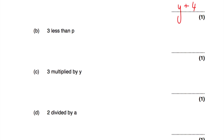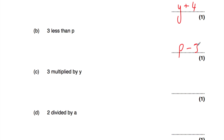Part b: three less than p. If p was ten, three less than ten would be seven, and we would do ten take away three. So three less than p would be whatever p is, take away three. If you want to find three less than a number, you take away three from it. So the answer is p subtract three.